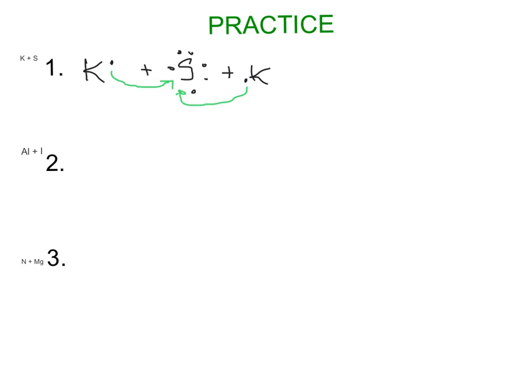Now we can show the ratio. It took two potassiums — each lost one valence electron, so each has a +1 charge. Sulfur gained two electrons and has a −2 charge. The ratio is two potassiums for every one sulfur, and it is electrically neutral: two times +1 gives +2 from potassium, and one sulfur at −2 gives −2, so it's overall neutral.